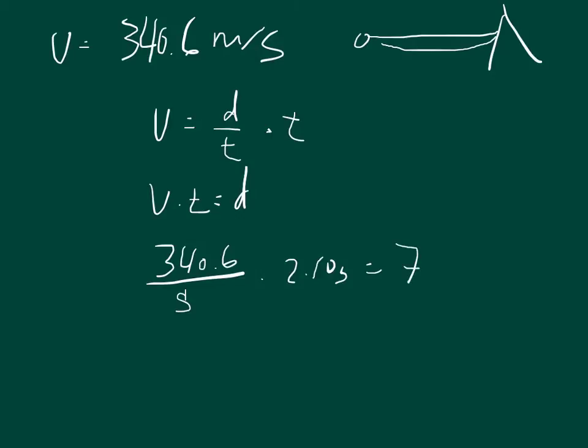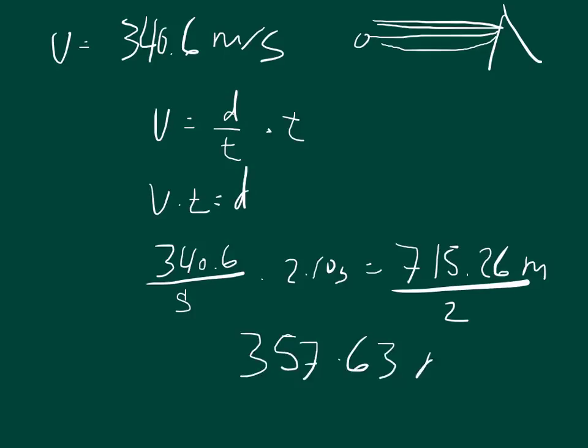Now the distance, the total round trip was 715.26 meters. And so that's round trip, that's from here to here and then back. And so we want to divide that by 2 to get the distance one way. And so the distance to the mountain is 357.63 meters.